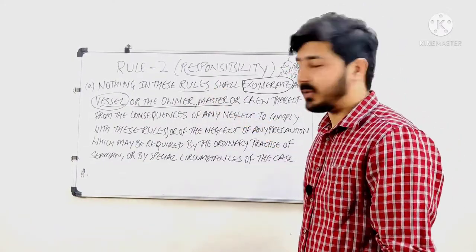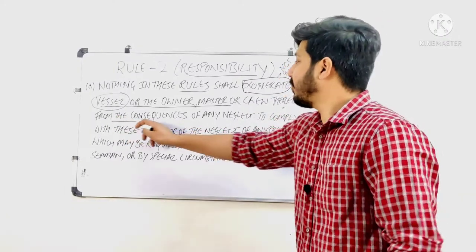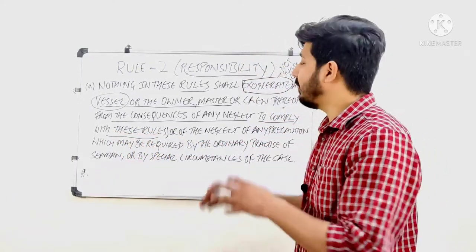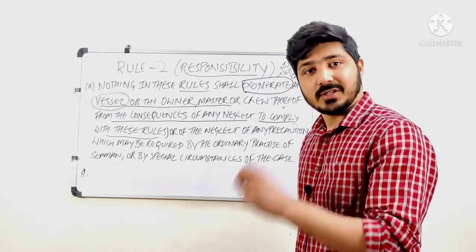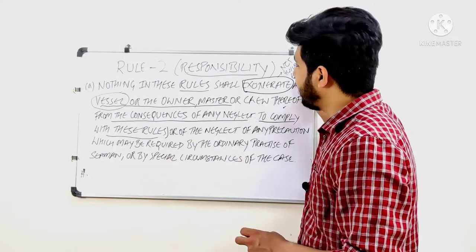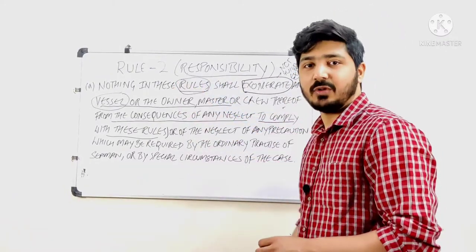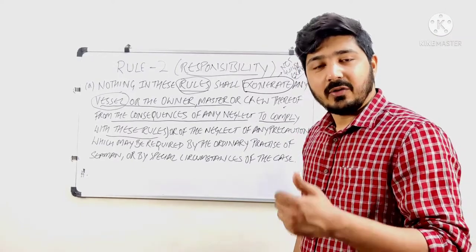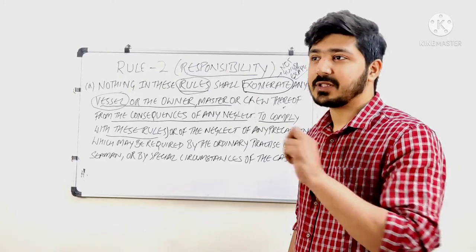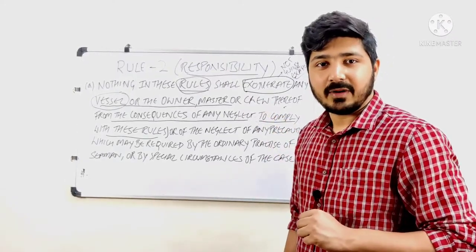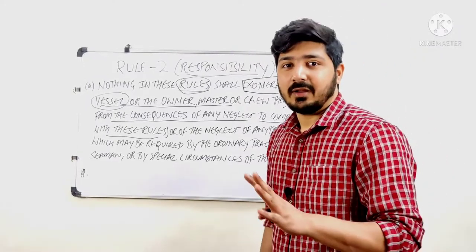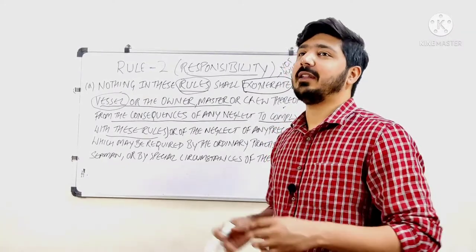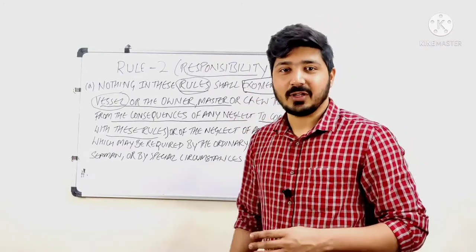These people or the vessel will not be able to escape from the consequences of any neglect to comply with these rules. If they do not follow the rules given in the ROR, there will be consequences. For example, if the rules say it is the other person's duty to keep clear of you, but you see that person is not able to keep clear and your vessel is going to collide — you have to do something about it. You cannot just let it collide and say it was not your duty.